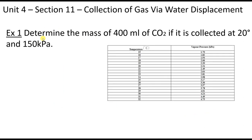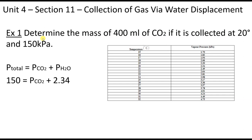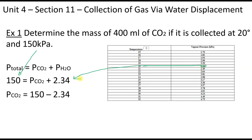The first thing we need to do is adjust our pressure using Dalton's Law of Partial Pressure. Total pressure equals the pressure of carbon dioxide plus water vapor. We add 150 kilopascals as our total, and at 20 degrees Celsius the vapor pressure of water is 2.34 kPa. After rearranging, the pressure exerted by the carbon dioxide is 147.66 kilopascals.